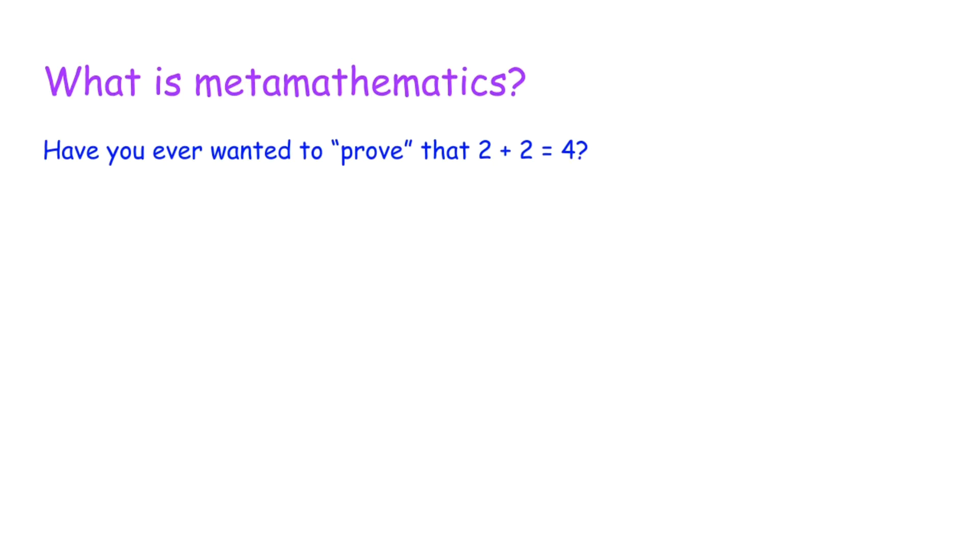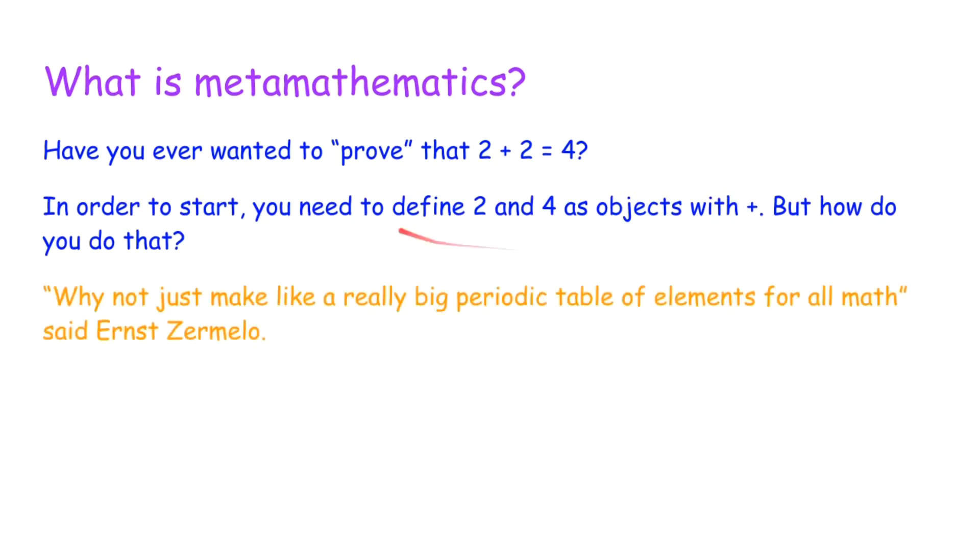And this is a problem because you want everything to be provable from just a small bit of statements which are intuitively true. So you don't need an intuitively true statement for every true statement. In other words, you don't need to have 2 plus 2 equals 4 be just an axiom. You need to prove it from something else. So you need to define 2 and 4 as objects with plus, and then prove it from those definitions. But how are you going to do that?